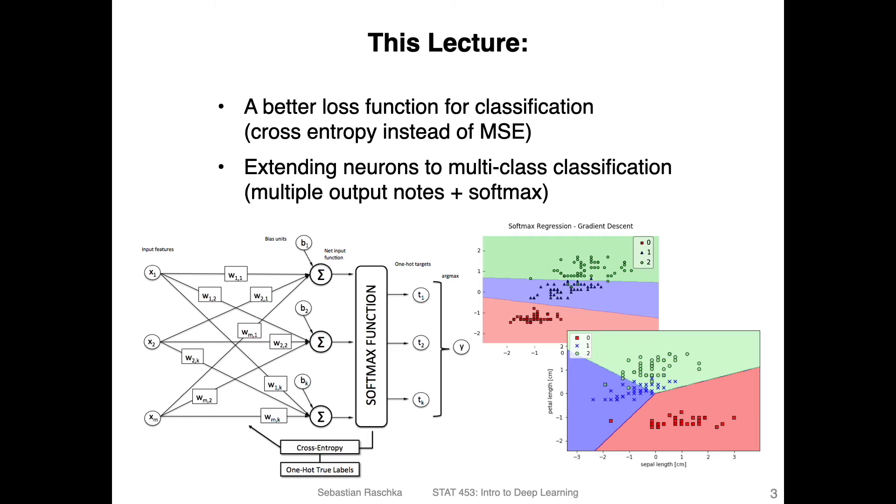So now, we continue with the concept of Adeline, but we make some improvements. One of these improvements is to use a loss function called cross entropy, instead of the mean squared error. And another improvement is to extend this neuron model to multi-class classification. So for that, we will be using multiple output nodes and a so-called softmax activation function. I briefly sketched it here on the left hand corner. We will talk about this in more detail later in this lecture. But essentially, we will have multiple outputs here, and that will allow us to classify datasets that have more than two classes.